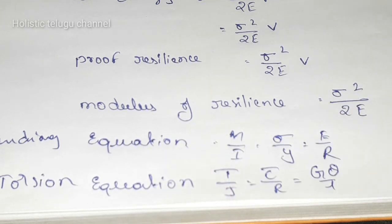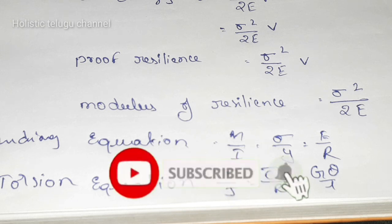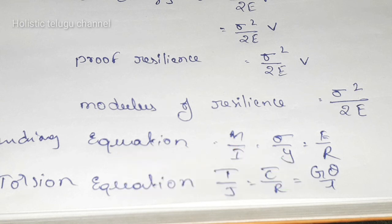T is torque or twisting moment, J is polar moment, tau is maximum shear stress, R is radius of shaft, theta is angle of twist, L is length of shaft. M is moment of resistance or bending moment, I is moment of inertia, E is modulus of elasticity, R is radius of curvature, Y is distance, and sigma is maximum stress induced in the outermost layer.